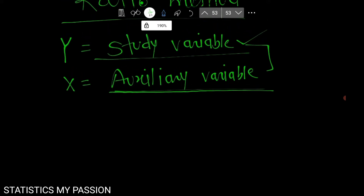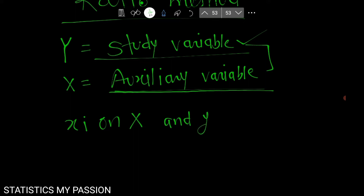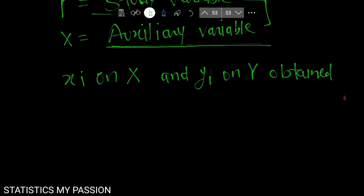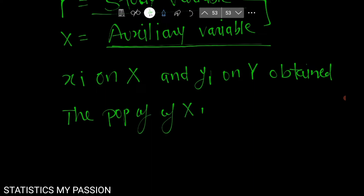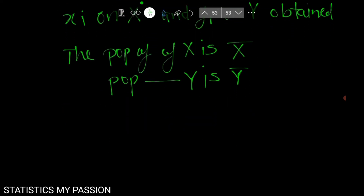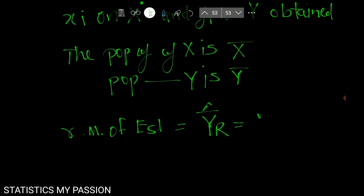So if xi and yi are obtained for sampling units, then the formula for the population mean: the population mean of x is x-bar, and the population mean of y is y-bar. Then the ratio method of estimation is: y-bar-cap equals y-bar upon x-bar, multiplied by x-bar population mean.